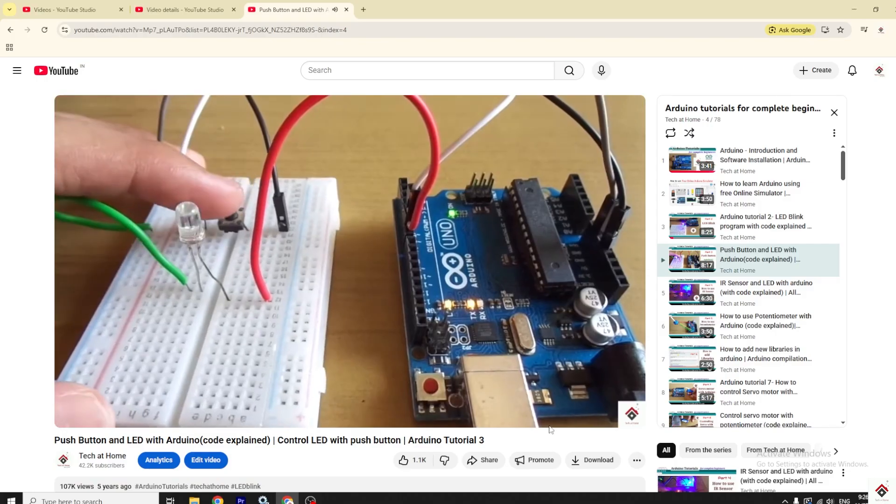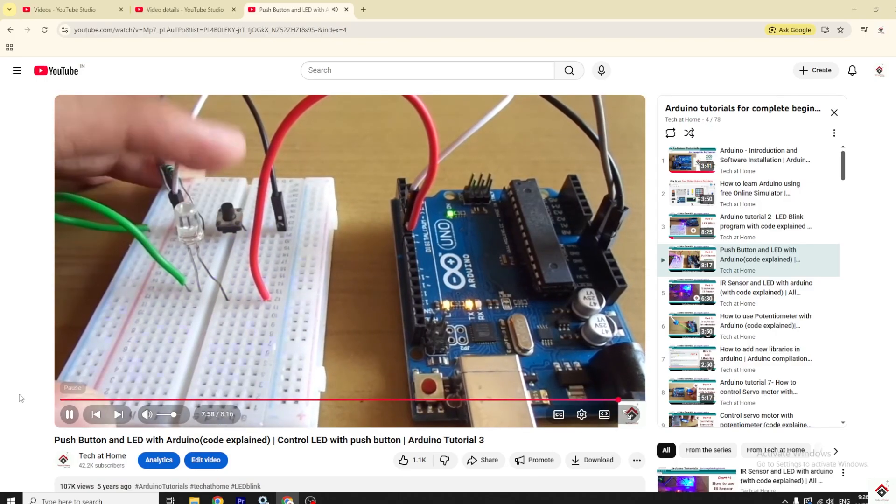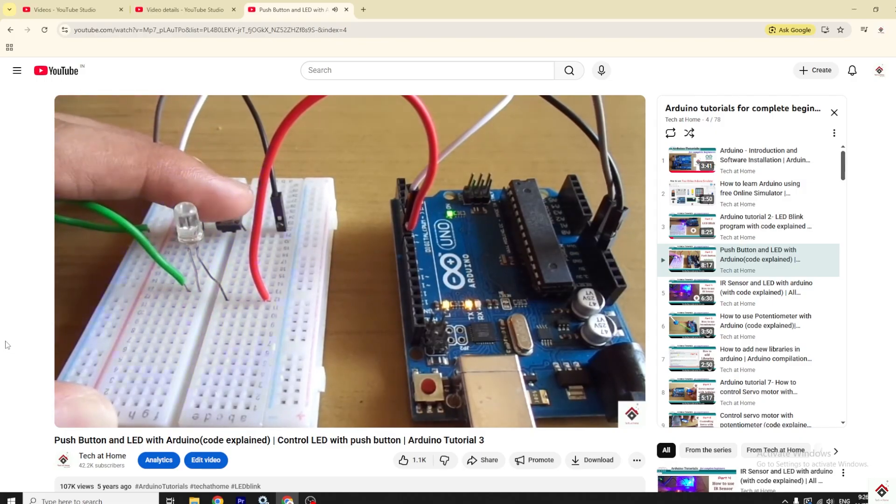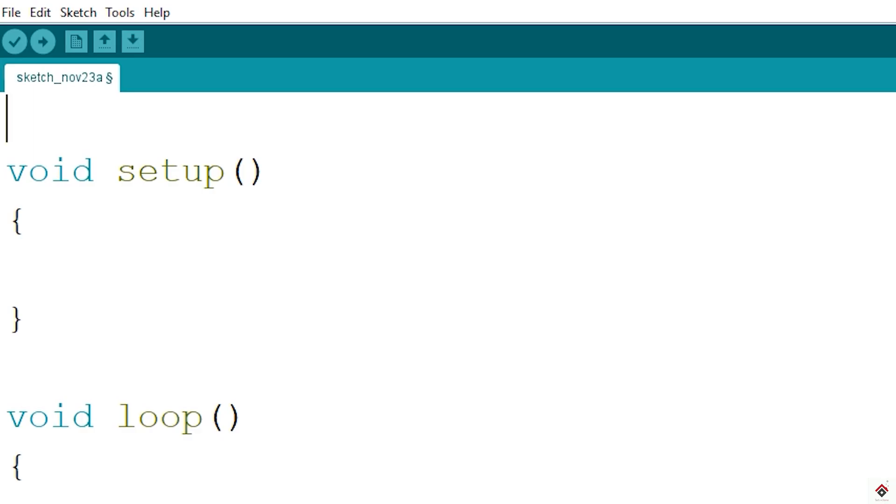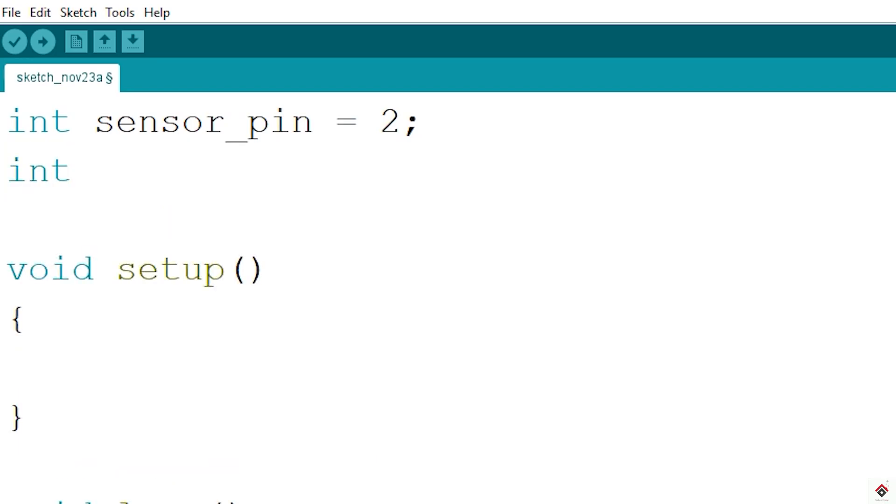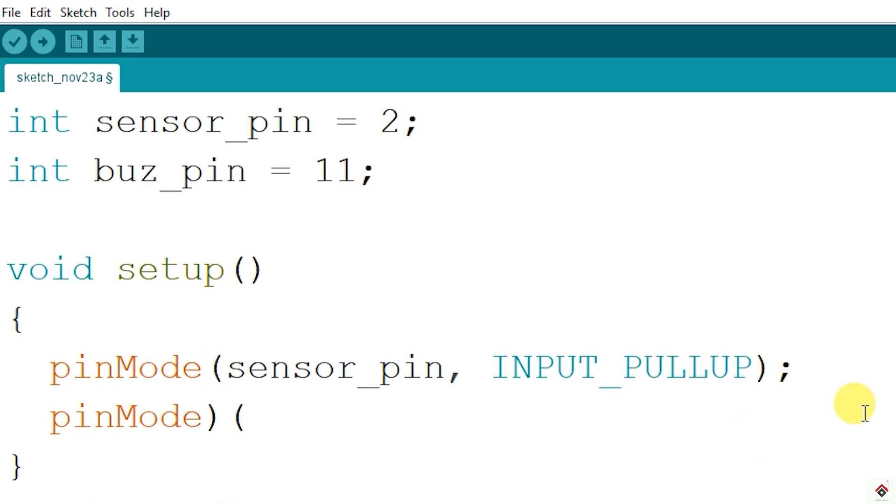Moving on to the code: since the sensor is nothing but a digital switch, for better understanding, you can also watch one of our previous tutorials on using a digital push button. Starting with the declaration, we have connected the sensor pin on digital pin 2 and buzzer on 11. In the setup, we have to set the mode of the sensor as input. So here, instead of input, make it INPUT_PULLUP. This is just to avoid the external pull-up resistor. For the buzzer, the pin mode will be OUTPUT.